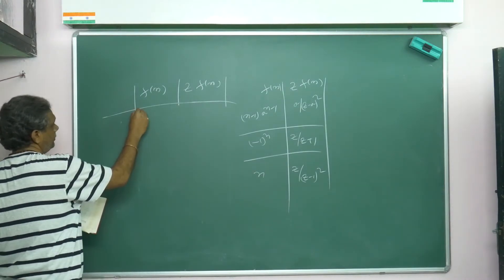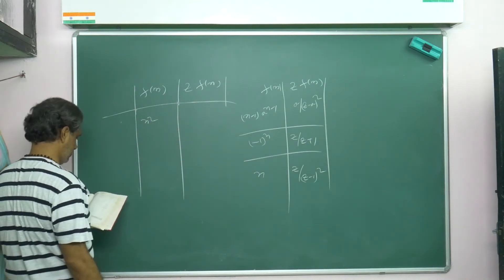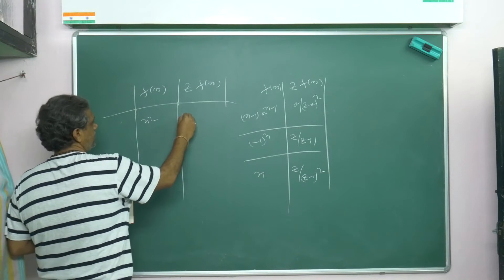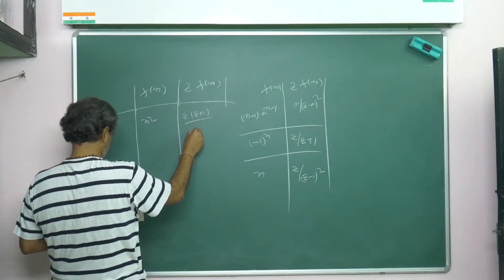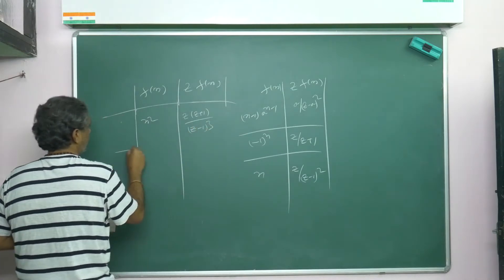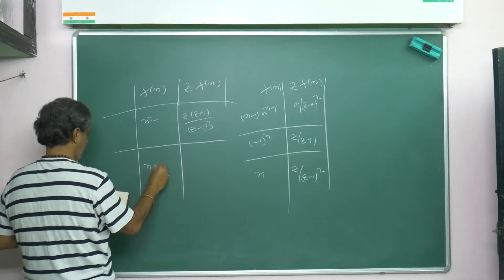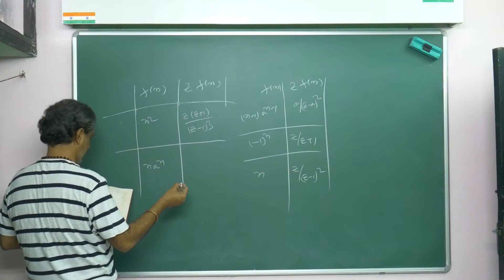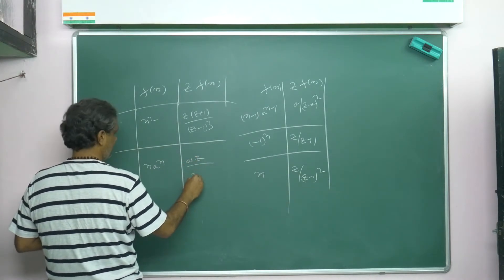Z{n squared} or Z{k squared} equals z(z+1)/(z-1) whole square. Then Z{n·a to the power n} or Z{k·a to the power k} is az/(z-a) whole square.